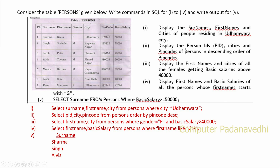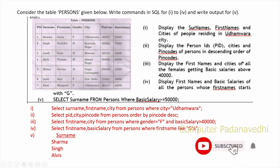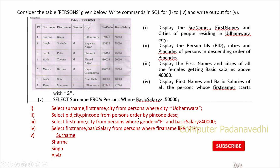Display the person IDs, cities, and pin code of persons in descending order of pin code: SELECT PID, city, pin_code FROM person ORDER BY pin_code DESC.